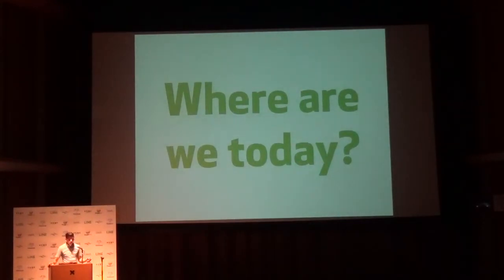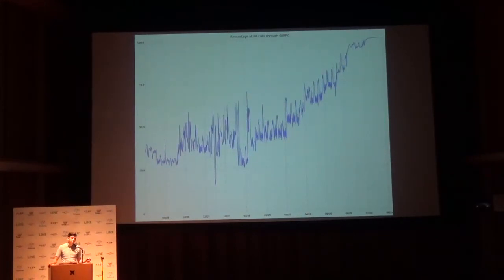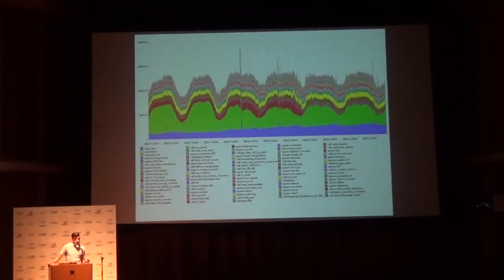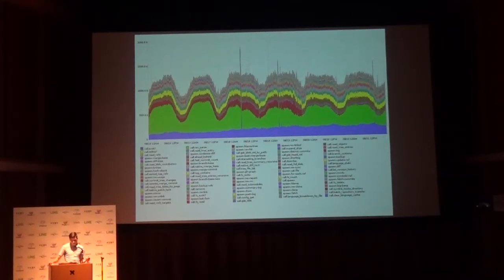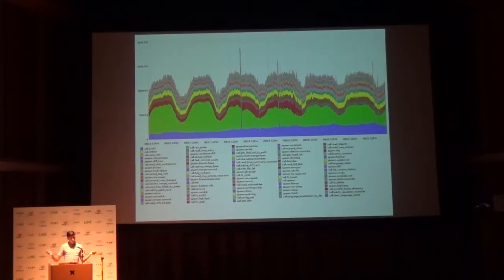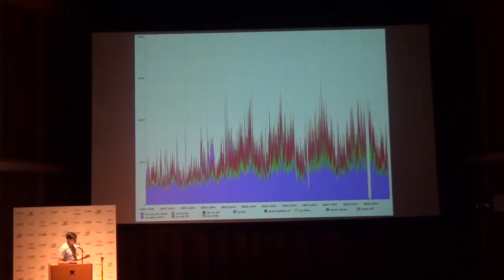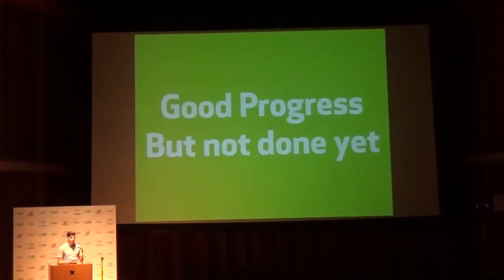Where are we today? This is that same graph of the percentage of Git calls going through GitRPC over the past year — we're basically really, really close to being done. We're somewhere like 99.9% of all Git calls going through GitRPC now. The GitRPC call graph from the past week shows we're topping out around 1.2 to 1.3 million calls per minute — a factor of five or six from a year ago. The Smoke call graph this week shows only about 100 calls per minute in spikes. We're getting really close, but we're not done yet.